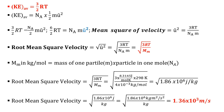Calculating the root mean square velocity of helium: we use √(3RT/M) with the molar mass of helium = 4 g/mol, converted to kilograms by dividing by 1000. This gives a root mean square velocity of 1.36 × 10³ meters per second.